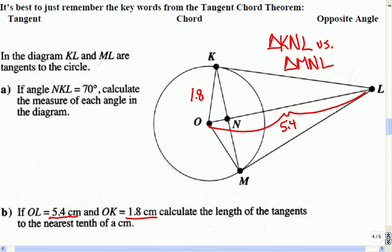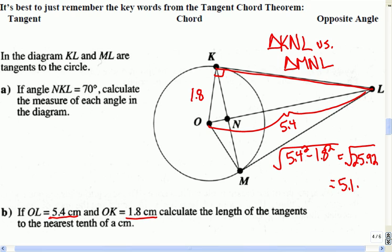And 1.8 is O, K. Okay, so to find the length of the tangents, so this is one of them here, we already know this is 90. We talked about that just a minute ago. That's right, that's the guy. Okay, so if I go 5.4 squared minus 1.8 squared, then I can get its, well, it's going to be a decimal, but we'll call it 25.92, which is about 5.1 centimeters.